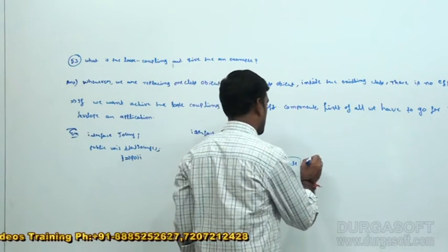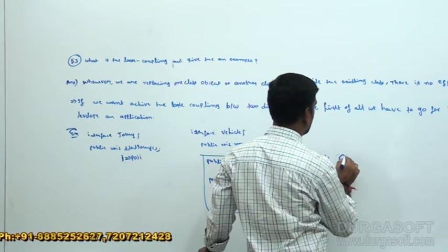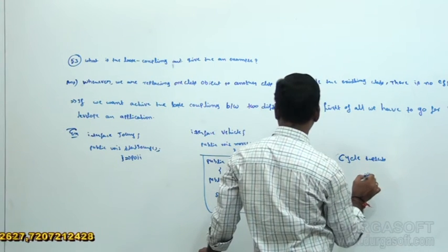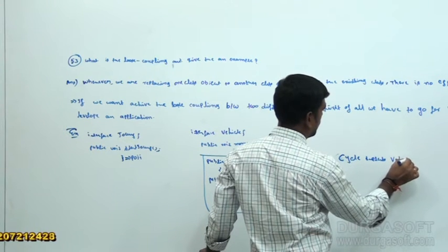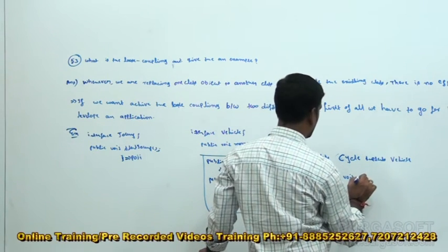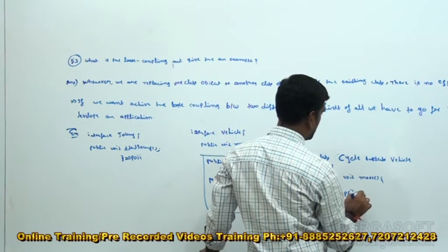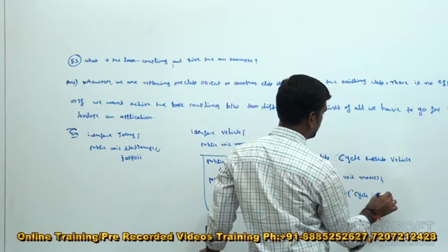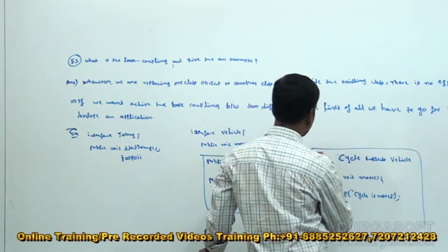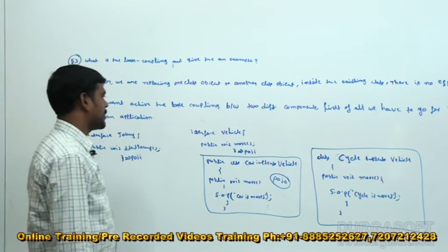After that, I am going to take another class. Class Cycle, implements Vehicle. Public void move — System.out.println — Cycle is moved. Then close the method, close the class. This is also one POJO.